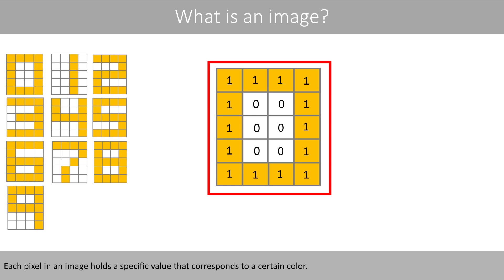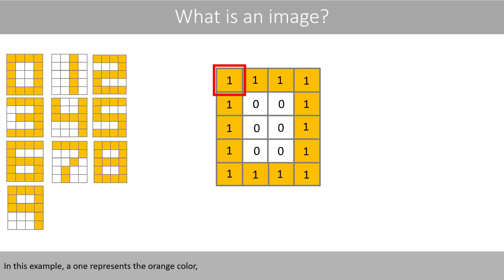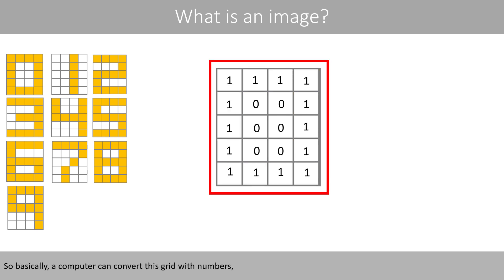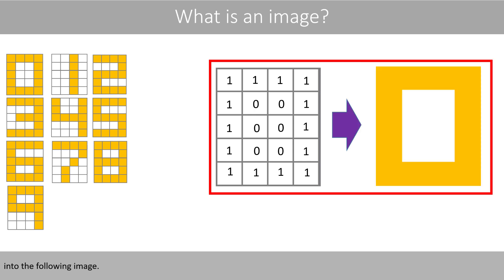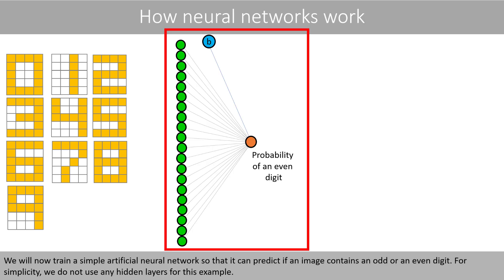Each pixel in an image holds a specific value that corresponds to a certain color. In this example, a 1 represents the orange color, whereas a 0 represents the white color. So basically, a computer can convert this grid with numbers into the following image. We will now train a simple artificial neural network so that it can predict if an image contains an odd or an even digit.